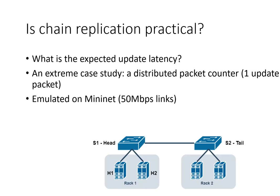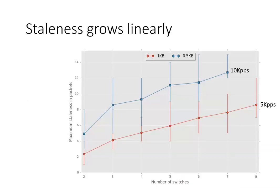We expect to see a linear growth in latency as we increase the number of switches. In this graph, you can see staleness as a function of the number of switches in the chain, varying between two and eight, sending UDP packets of one kilobyte and half a kilobyte at line rate speed — measuring two different packet rates: 5 kilopackets per second in the red line and 10 kilopackets per second in the blue line. As we can see, when we double the packet rate, staleness doubles as well, and as we increase the number of switches, staleness increases linearly.